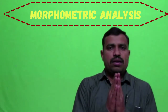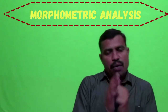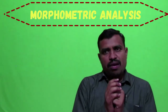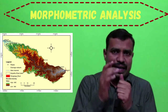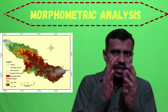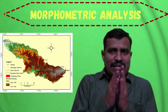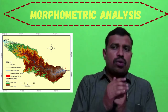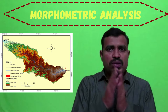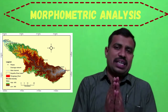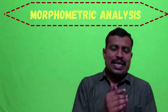Drainage density indicates the closeness of spacing of channels and provides a quantitative measure of the average length of a stream channel for the whole basin. Higher drainage density results from impermeable surface material. Low drainage density leads to coarse drainage texture, while higher drainage density leads to fine drainage texture.